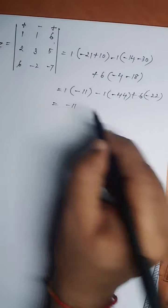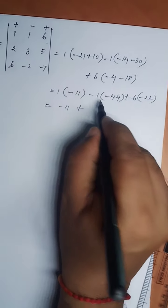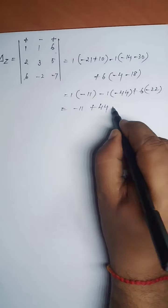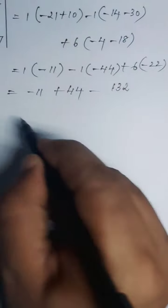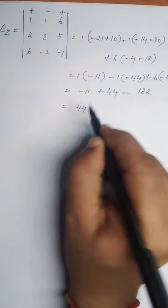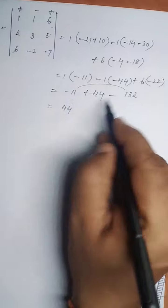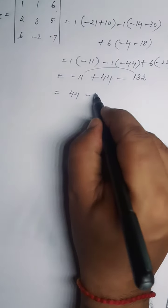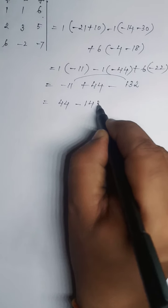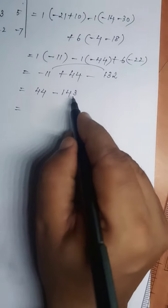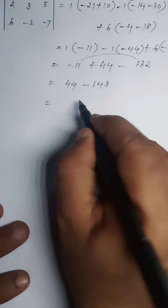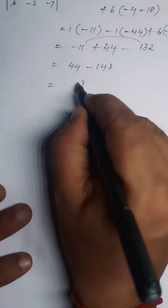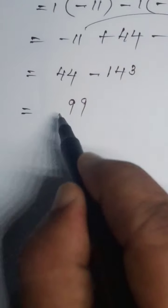Multiply: 1 into minus 11 is minus 11; minus into minus gives plus 1 into 44 is 44; plus into minus gives minus 6 into 22 is minus 132. Adding together: 44 minus 11 minus 132 equals minus 143 plus 44, that is minus 99. The bigger number sign is minus, so del z equals minus 99.